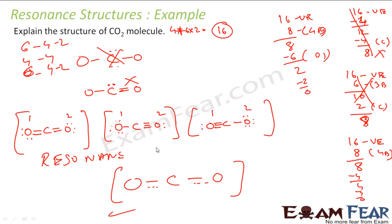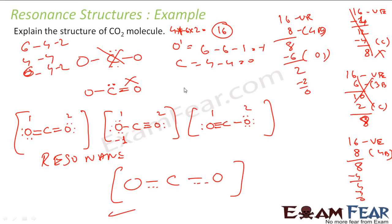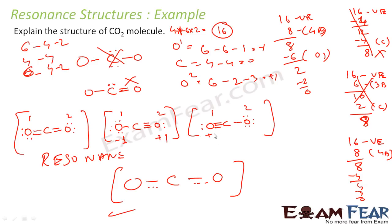Let's take the second resonance structure. Oxygen one has 6 in natural form minus 6 electrons here, minus 1 bond — that means minus one charge. Carbon has 4 in natural form minus 4 bonds — zero charge. Oxygen two has 6 in natural form minus 2 electrons here, minus 3 bonds — that is plus one charge. Similarly, the third structure gives plus one charge on one side and minus one charge on the other.